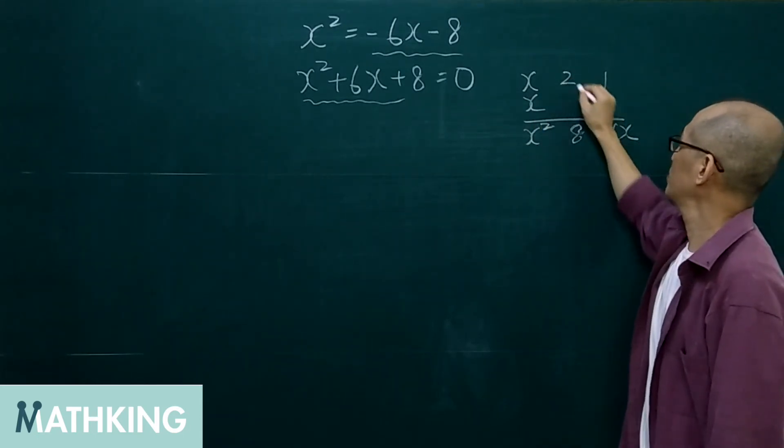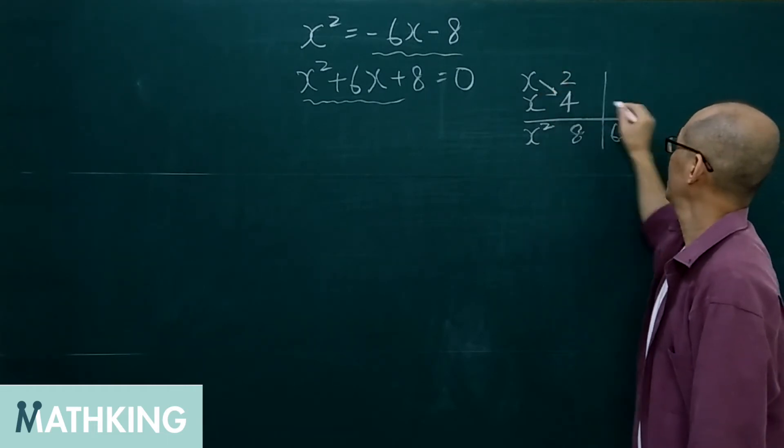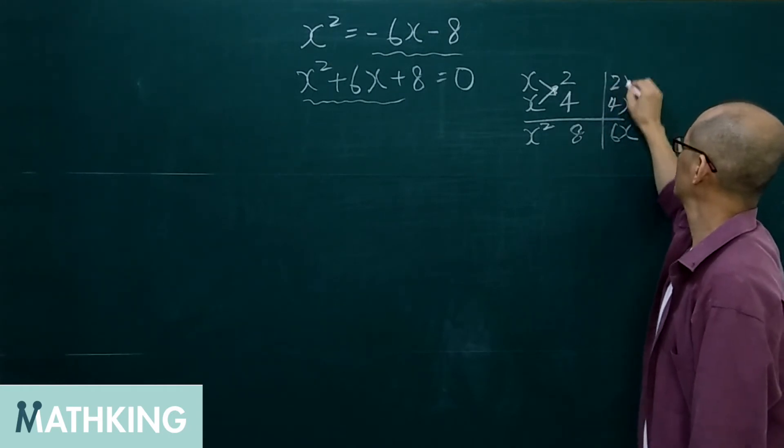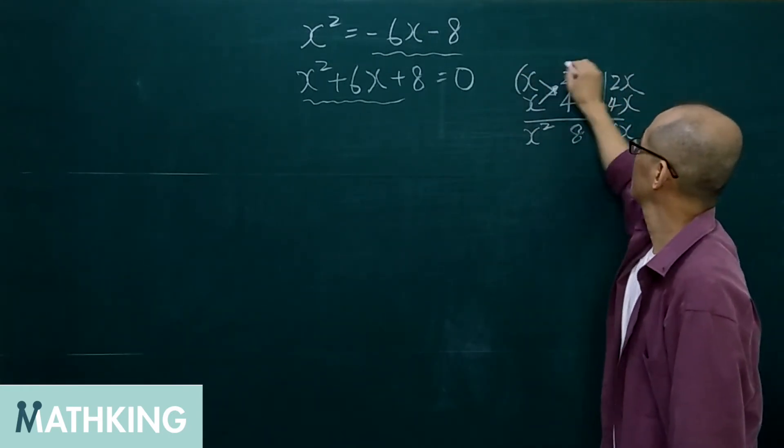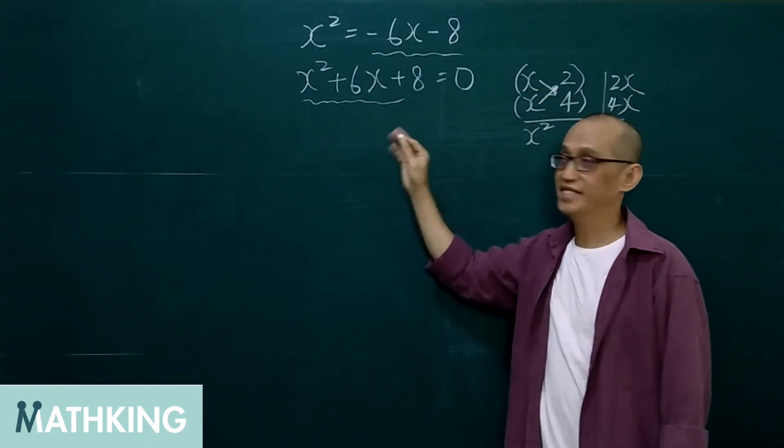And 2 times 4, we get 8. x times 4 is 4x. x times 2 is 2x. So, this one can be factorized.